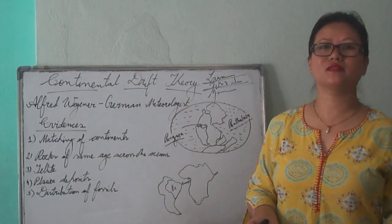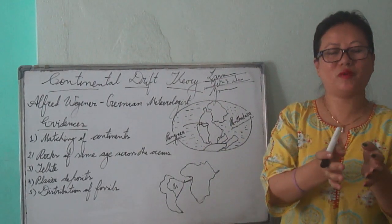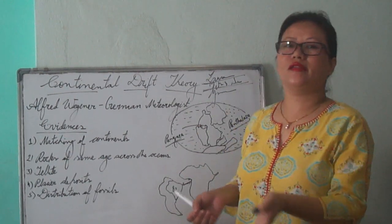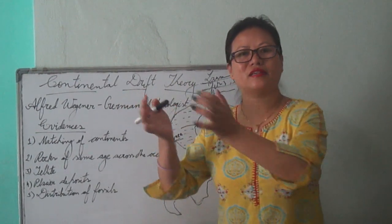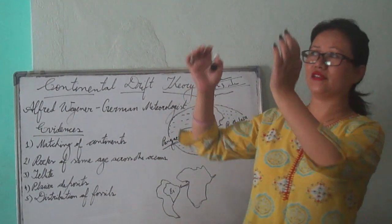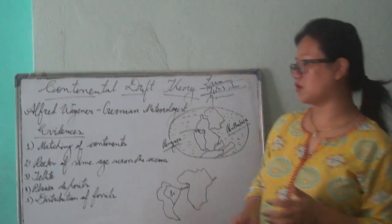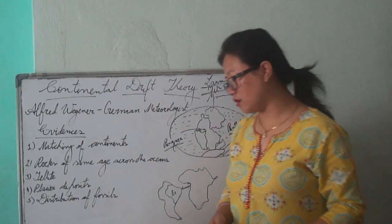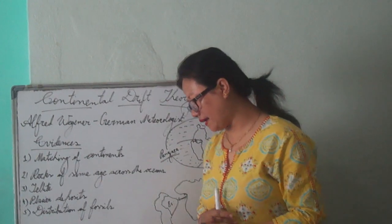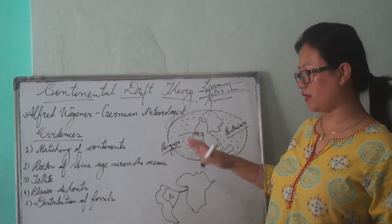Third, we have Tillite. Tillite refers to sedimentary rocks — rocks made by layers and layers — formed by the deposits of glaciers. When glaciers move, they carry sediments; as they melt, they leave those sediments behind, forming Tillite rocks. The same kind of Tillite is found in Africa, Falkland Islands, Madagascar, Antarctica, Australia, and even in India. This is another proof that all the continents were together at the beginning.